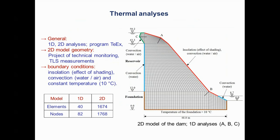1D and 2D thermal analyses were performed. Within 1D analysis, three characteristic areas A, B, and C were studied. The geometry of the 2D model was determined from data of the project of technical monitoring and TLS measurements. The height of the model was 50.2 meters and the width was 48 meters. The mesh contained 1,674 finite elements. At the edge contacting the rock, a constant temperature of 10°C was assumed. On constantly wetted edges, convection due to water was considered. At the part with water level oscillation, convection due to air or water was taken into account.